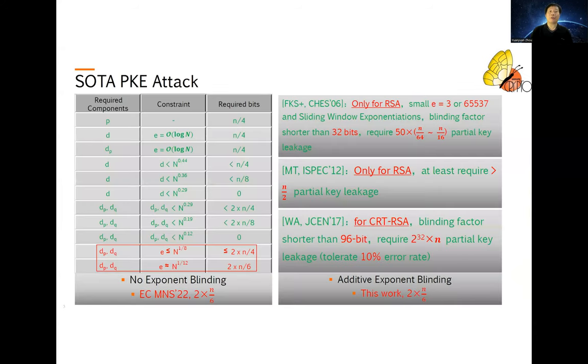I will first introduce you the current state-of-the-art of a PKE attack on CRT-RSA. Without Exponent Blending, the current state-of-the-art is the recent Eurocrypt work. The authors managed to recover the full key using only one-third of DP and DQ. And in this work, we extend this to Additive Exponent Blending case, and this is the current state-of-the-art in this regard.